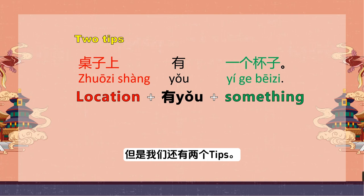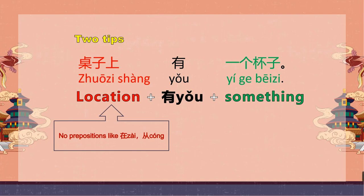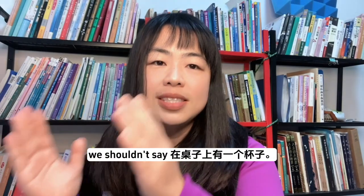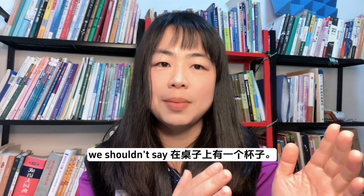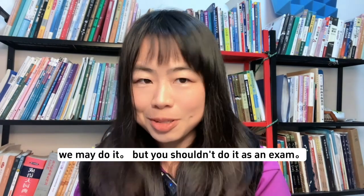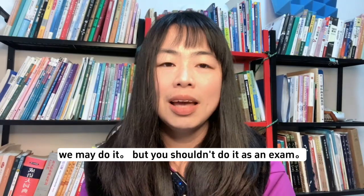但是我们还有两个tips。首先，grammatically speaking, we shouldn't add a preposition like 在 or 从 in the location part. We shouldn't say 在桌子上有一个杯子 or 从桌子上有一个杯子. In daily life you may hear it, but you shouldn't use it in an exam.